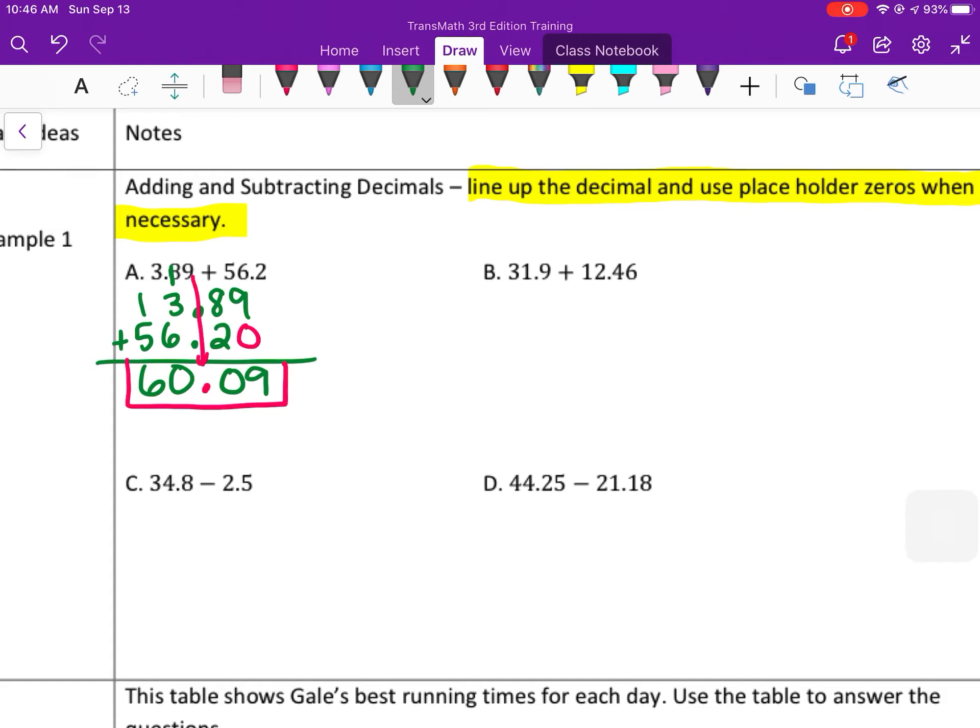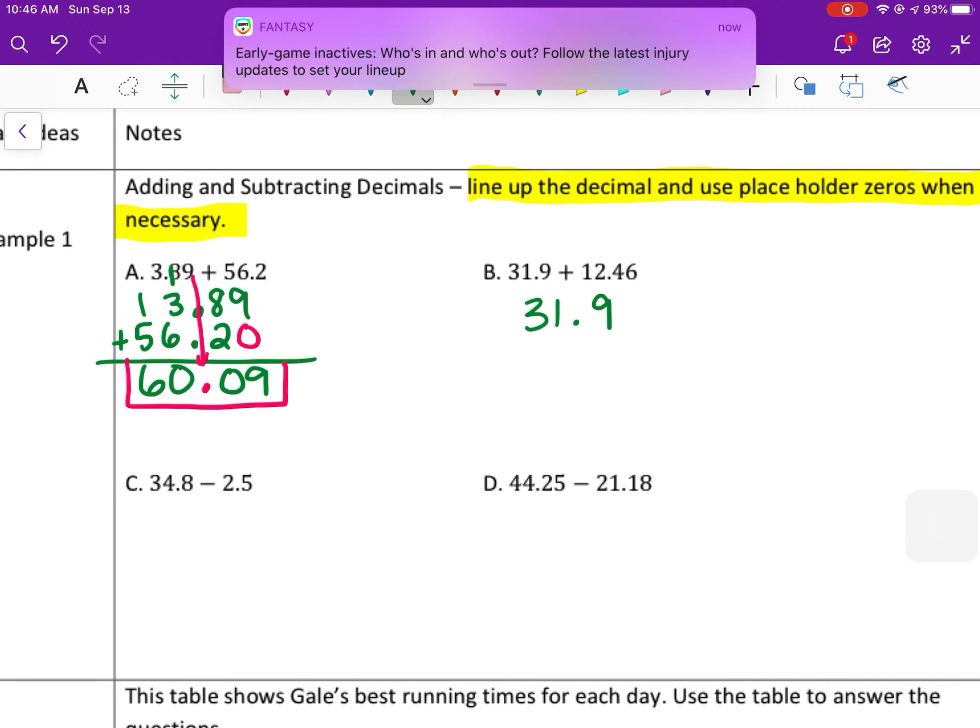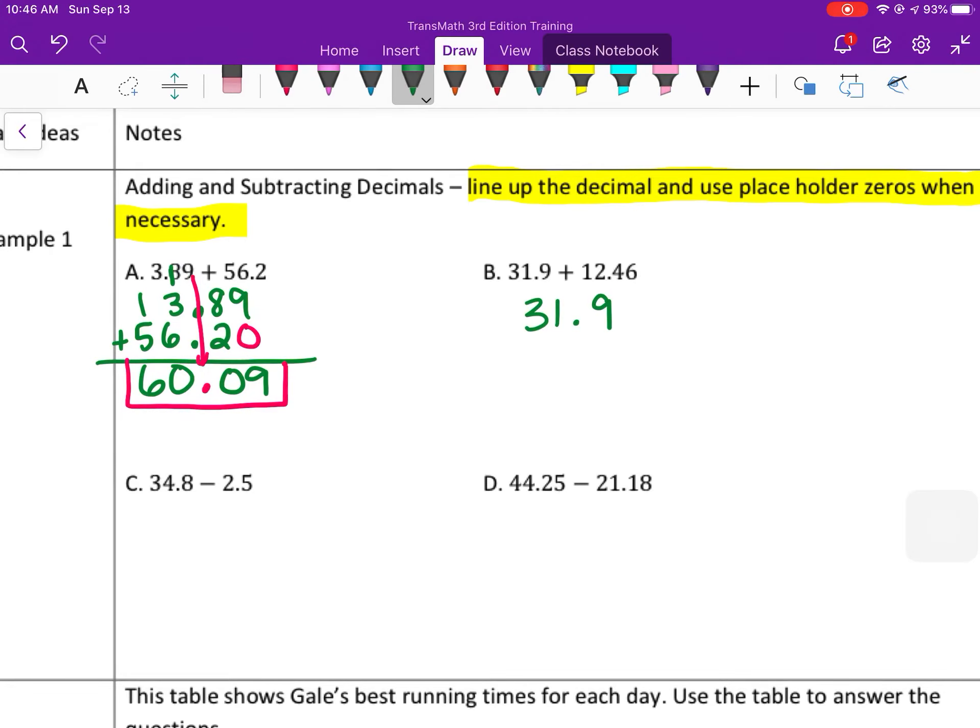So for the next one, we have 31.9 plus 12.46. So 12.46, put in the placeholder of 0 and add from right to left. So 0 plus 6 is 6. 9 plus 4 is 13. Carry the 1. 2 plus 1 is 3, plus 1 more is 4. 3 plus 1 is 4. Bring down the decimal and your final answer is 44.36.